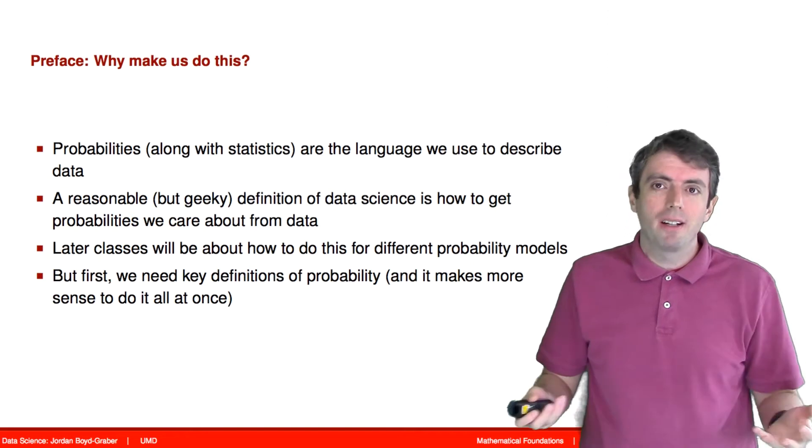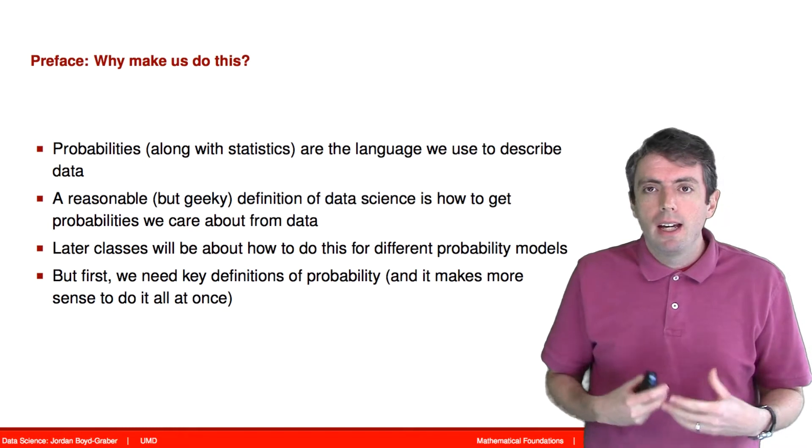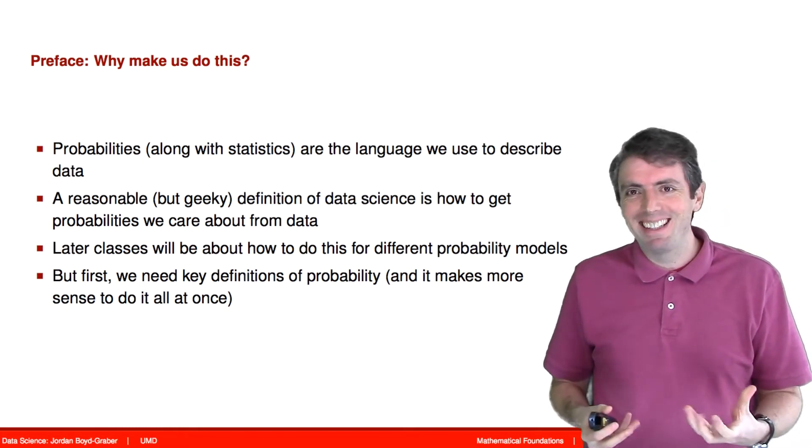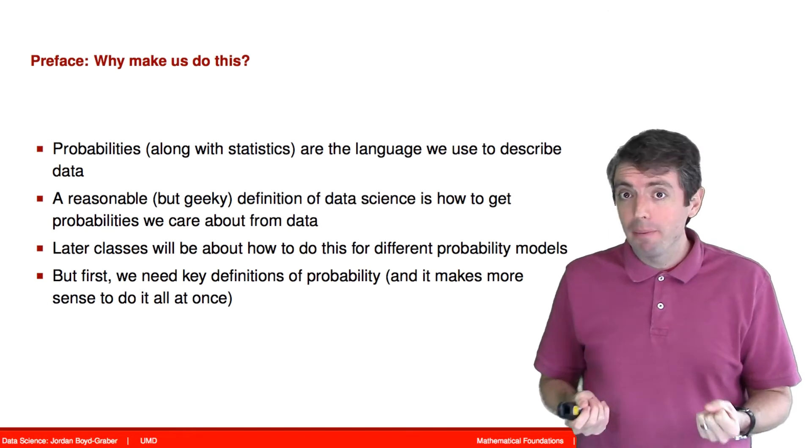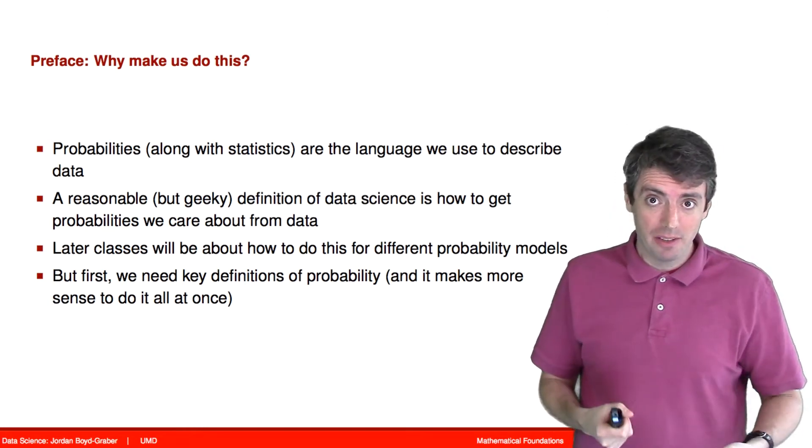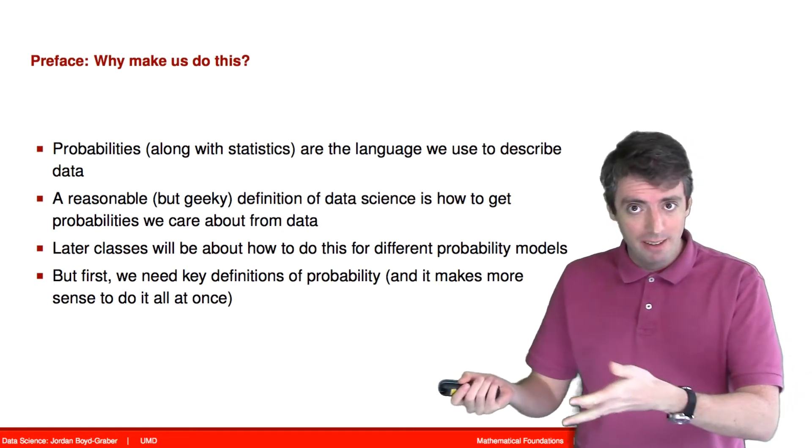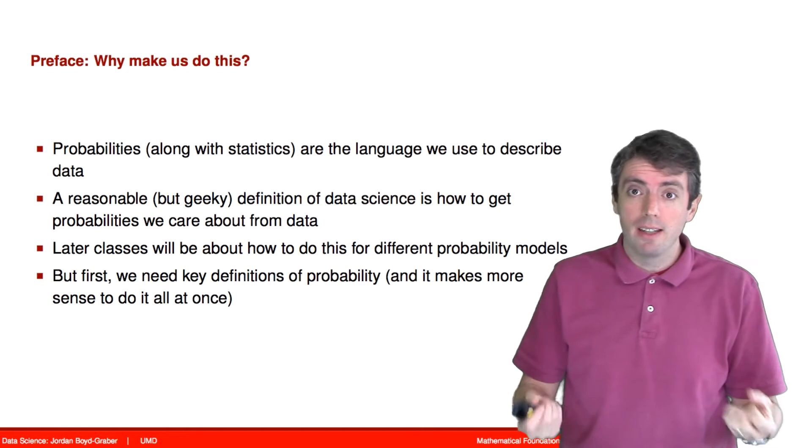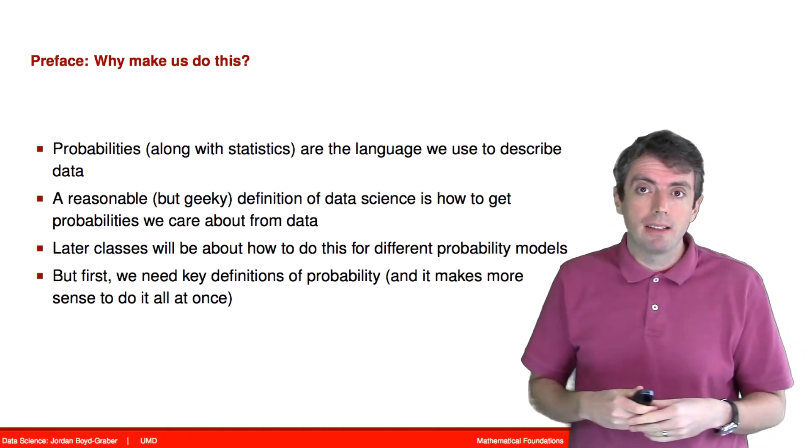One thing that I want to talk about before we get too deep in this is why are we talking about probability in the first place? A reasonable definition of data science is how to extract probabilities from data. Probabilities are the language which we use to communicate our certainty, our confidence in the predictions that we make about the world, or the confidence about the information that we've extracted from data.